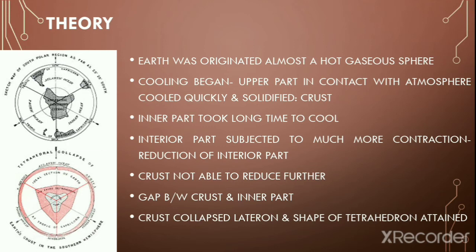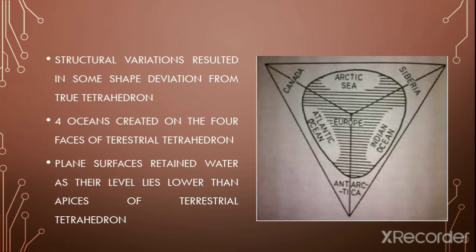However, it took a long time for the interior part of the earth to cool down. Consequently, the interior part of the earth was subjected to much more contraction, which resulted in a marked reduction in the area of the inner part. The crust of the earth that was already cooled could not be subjected to further reduction, and this created a gap between the crust and the interior part. Consequently, the crust collapsed on the interior part and the earth gradually assumed the shape of a tetrahedron.